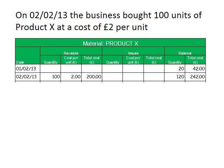We don't need to put anything in the issues columns as nothing is being issued with this transaction, but we need to update our balance columns. We had 20 units before this transaction and purchased a further 100 units, so we now have 120 units on hand. Before this transaction our inventory had cost us £42, and we then purchased units costing an additional £200, so our inventory overall now carries a cost of £242.